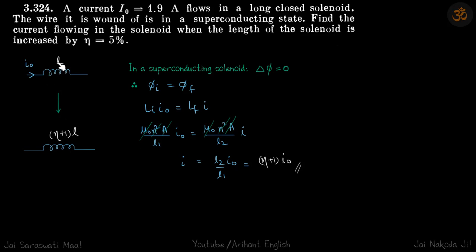We have an inductor of length L and current I₀ is flowing through it. The wire it is wound of is in a superconducting state. The length of the solenoid is increased by 5%, so it is stretched a little bit. Its new length is (η + 1) times L.